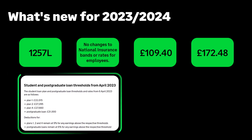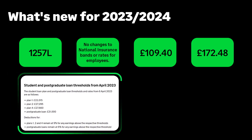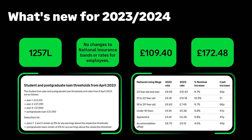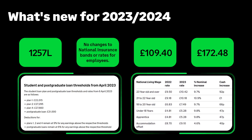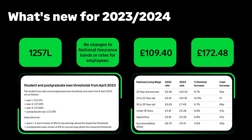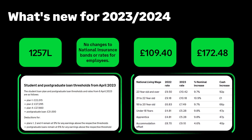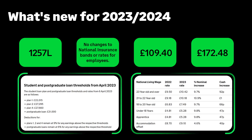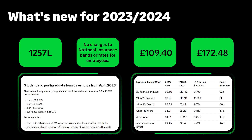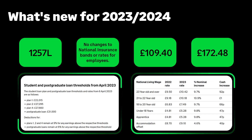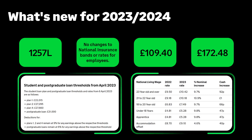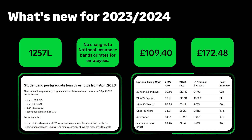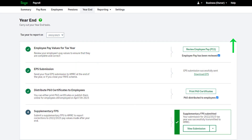Student loan thresholds have increased as shown. The rates for the national minimum and national living wage have increased from 1 April. If you would like to know more about legislation changes in the new tax year, you can visit HMRC's website or our Help Centre by clicking the Help option at the top of the screen.